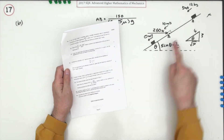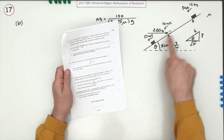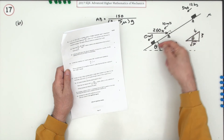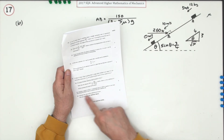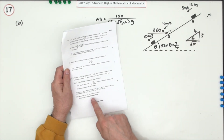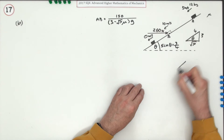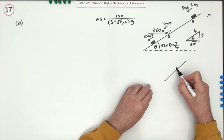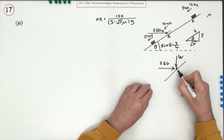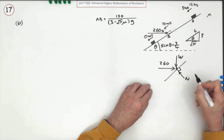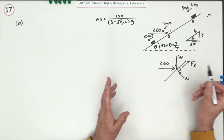Part (b): on reaching 10 m/s, a horizontal force of 260 N is applied, braking the body and forcing it to stop in half the distance AB. We need to find the coefficient of friction to two significant figures. At point B there is now the weight, the horizontal force of 260 N, the normal reaction N, and the friction force to consider.